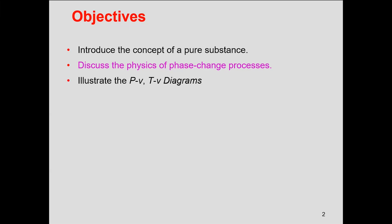Then we'll try to replicate that process on pressure-specific volume and temperature-specific volume diagrams. Do you know why we have chosen these two characteristic properties — pressure-specific volume and temperature-specific volume — for the process diagrams? We have chosen two independent intensive properties to identify the state of the system, so on the P-v and T-v diagrams you have the representation of states of a system.